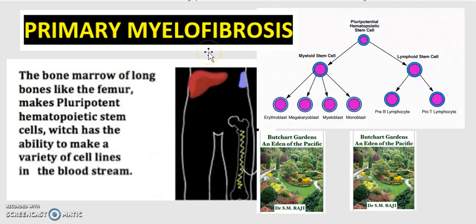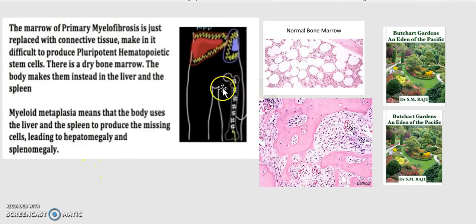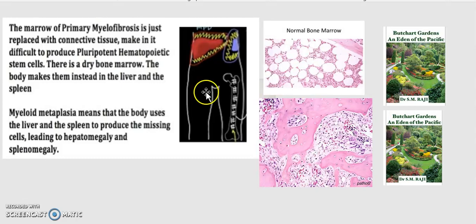So what is primary myelofibrosis? The bone marrow of long bones such as the femur makes pluripotent hematopoietic stem cells, which have the ability to make a variety of cell lines such as myeloid lines and lymphoid lines. In primary myelofibrosis, the marrow is replaced with connective tissue, making it difficult to produce pluripotent hematopoietic stem cells.